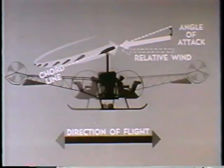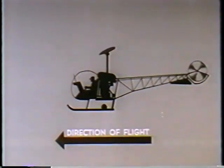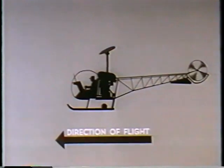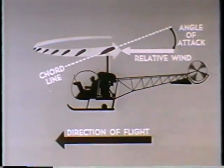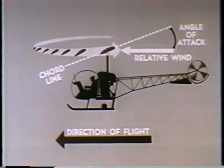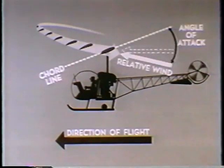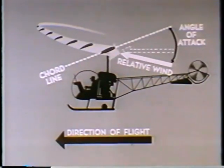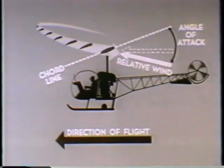Meanwhile, on the other side of the helicopter, we increase the amount of lift produced by the retreating blade. Now, if the retreating blade were not allowed to flap down, this would be its path, and the relative wind would be from this direction. The relative wind is always opposite to the rotational path of the blade. Now, as the retreating blade is allowed to flap down, there is a change in the direction of relative wind, which results in a larger angle of attack. It is this difference in the relative wind, caused by the flapping action, which increases the amount of lift.